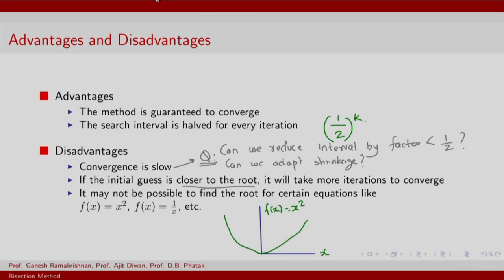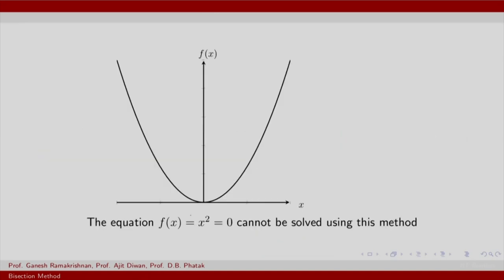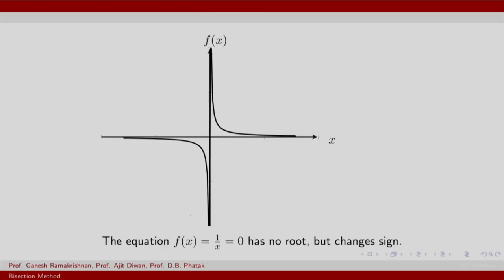Also, this would not work if the root is at infinity. So 1 upon x is at infinity. So 1 upon x is a classic example. So here is the equation f(x) equal to x square, which cannot be solved using this method. The equation f(x) is equal to 1 upon x has no root, but it is interesting that it just changed sign. So just because you change the sign as you go from say a potential point a here to potential point b here, you are going to actually search for a midpoint, shrink your interval, but you realize that unless you move away from the interval ab, you would not get to the root.